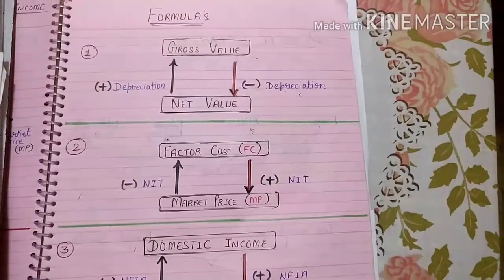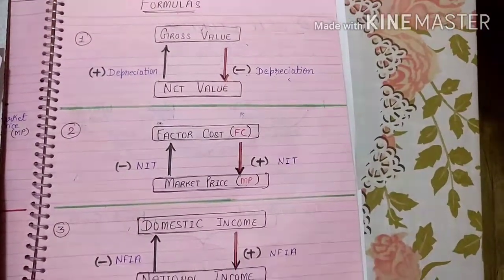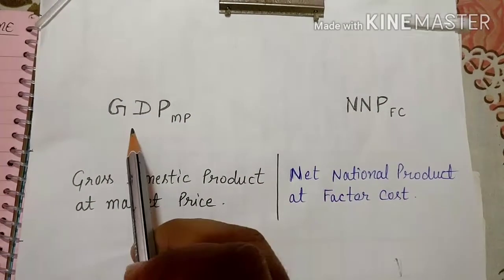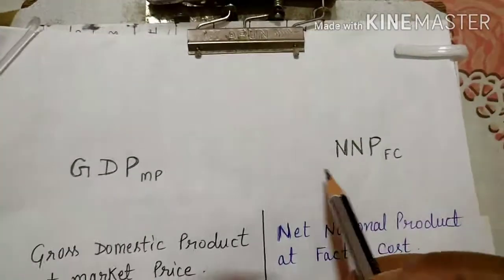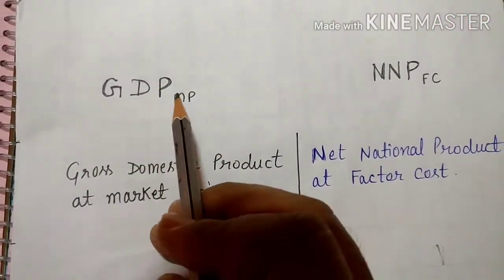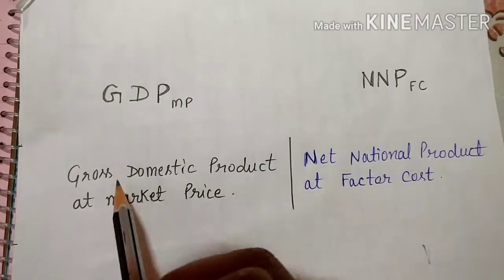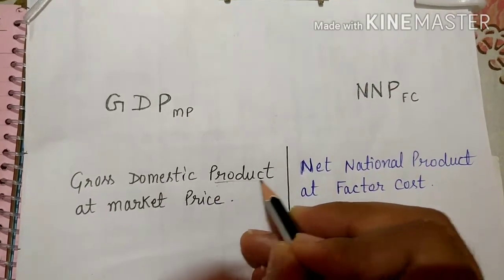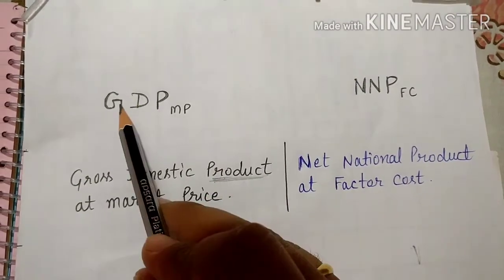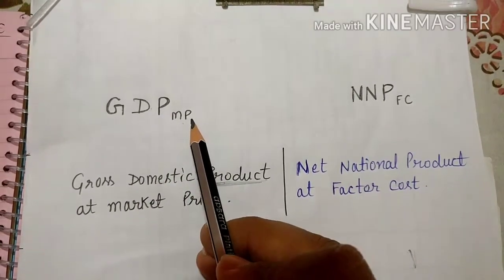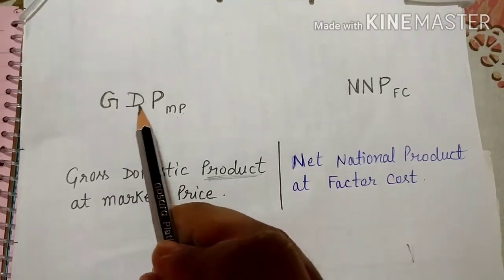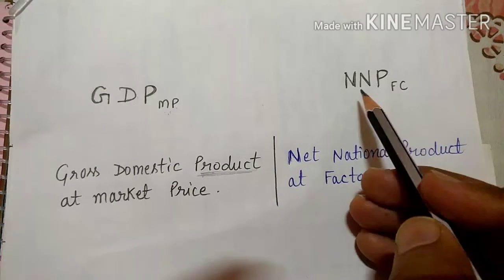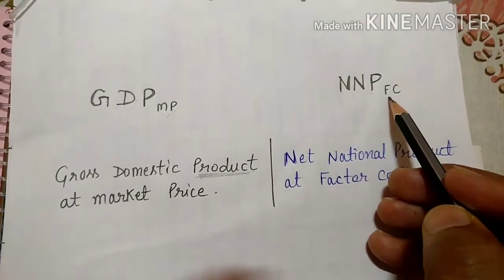These are the three basic formulas we are going to use to find national income. When finding national income, you will come across terms like GDP at MP and NNP at FC. GDP stands for gross domestic product — 'D' for domestic, 'P' for product, which also equals income. NNP at FC means net national product at factor cost.